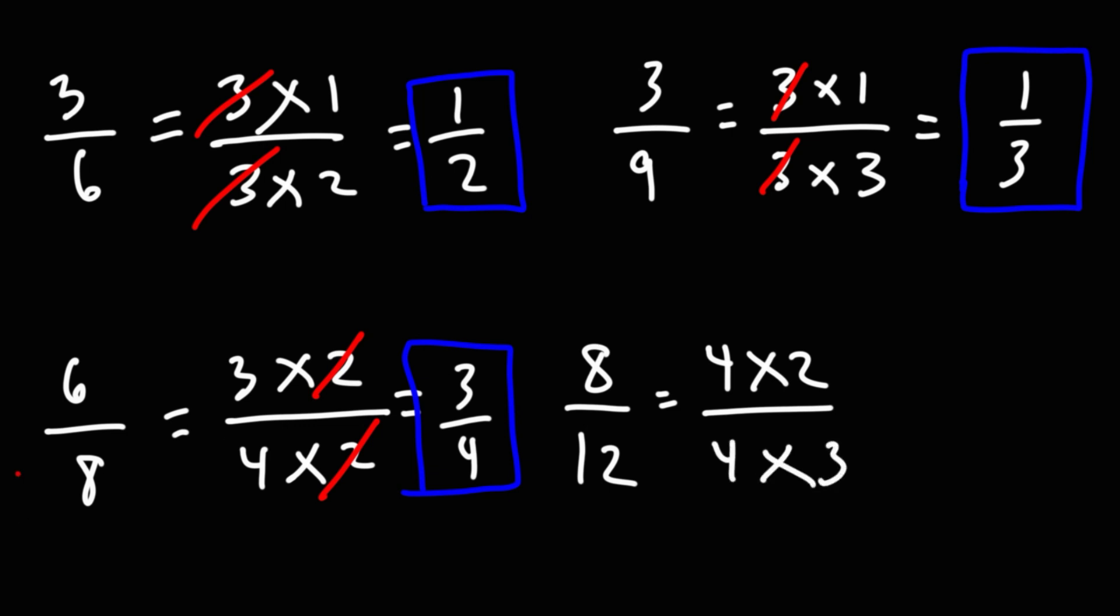The common number here is 4. So both 8 and 12 are divisible by 4. What we have left over is 2 over 3.